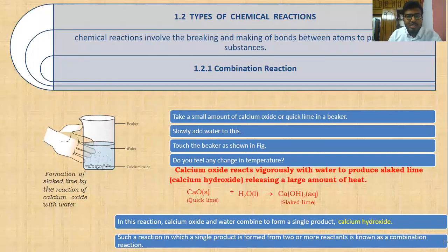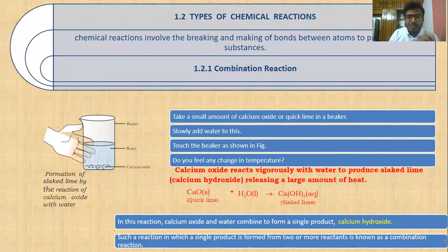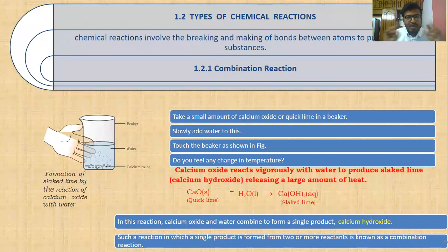Hello friends, we are starting with the next topic: types of chemical reactions. We already discussed what a chemical reaction is — the breaking or making of bonds between atoms to produce a new substance. Now, the first type is the combination reaction. Two reactants A and B are combined to get one product C. A reaction in which a single product is formed from two or more reactants is known as a combination reaction.